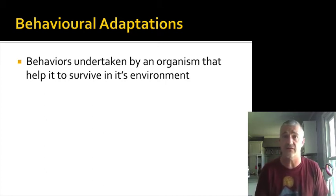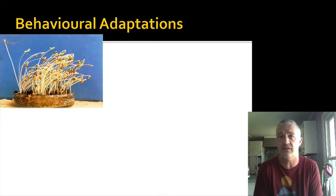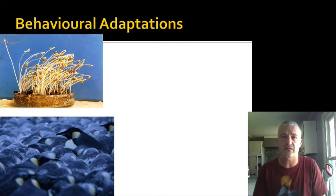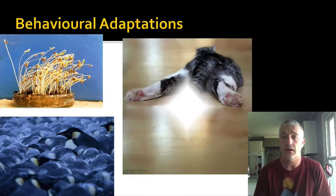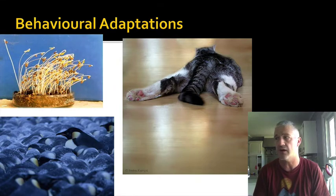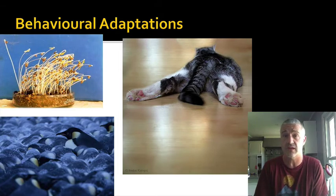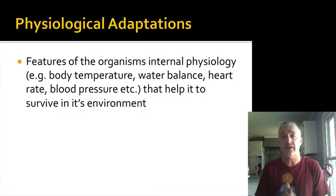Behavioral adaptations are behavior changes taken on by an organism to help it survive in an environment. Examples include plants growing toward light to function better, Emperor penguins grouping together during cold times to increase warmth, and animals in hotter conditions loafing around to conserve energy and save nutrients for when they need them.